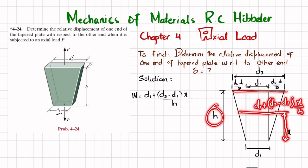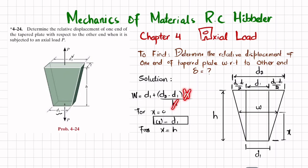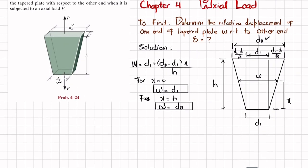For the full height H, the width is D2, and at a height of x, it scales accordingly. To verify: if you put x equal to 0, this term becomes 0 and w equals D1 — correct. If you put x equal to H, then D1 cancels and w equals D2 — correct. So this width function is verified.